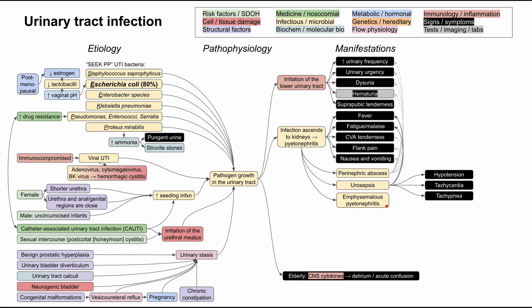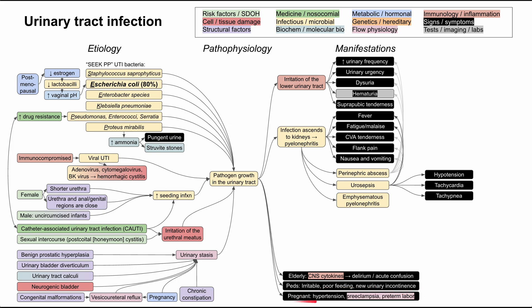There are special considerations in specific patient populations. In the elderly, UTIs might cause delirium or acute confusion, thought to be due to cytokines reaching the central nervous system and activating toll-like receptors. In pediatric patients, who may not communicate dysuria, signs include irritability, poor feeding, or new urinary incontinence in a previously potty-trained child. In pregnant patients, UTIs can cause hypertension, preeclampsia, and preterm labor, so we screen pregnant women for asymptomatic bacteriuria.